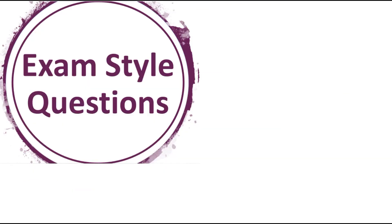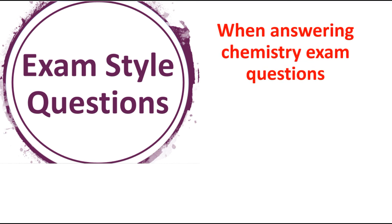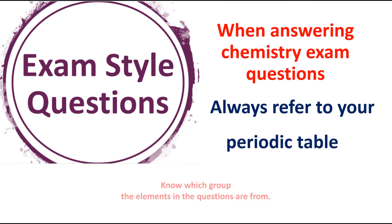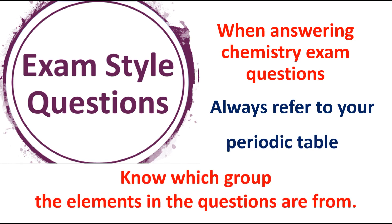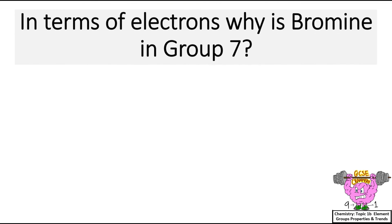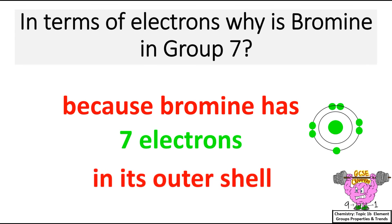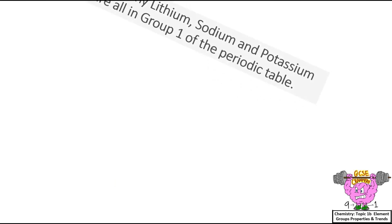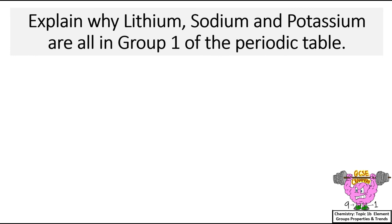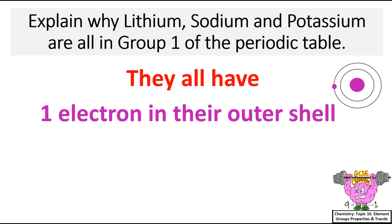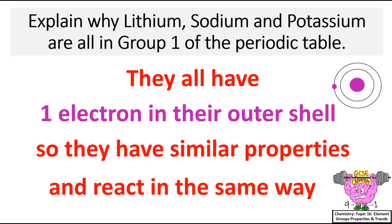Exam style questions. When answering chemistry exam questions, always refer to your periodic table and know which group the elements are from. In terms of electrons, why is bromine in Group 7? Because bromine has seven electrons in its outer shell. Explain why lithium, sodium and potassium are all in Group 1 of the periodic table. They all have one electron in their outer shell, so they have similar properties and react in the same way.